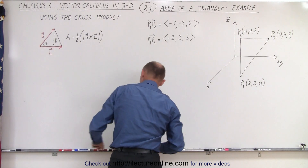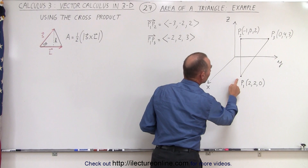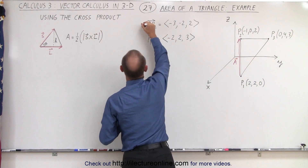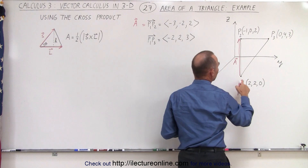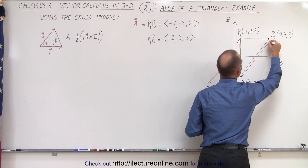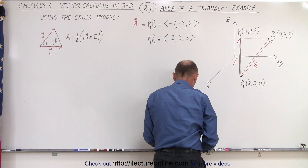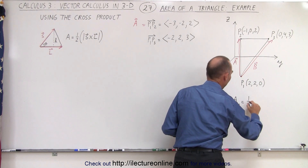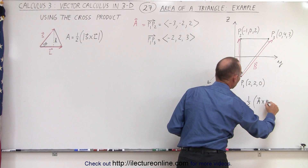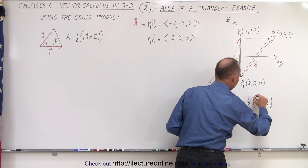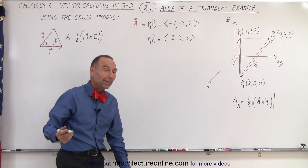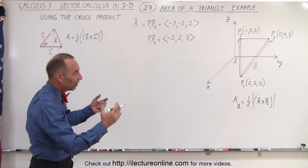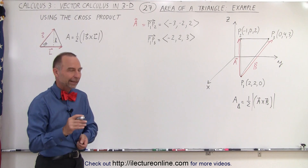We're going to define vector A from P1 to P2, and vector B from P1 to P3. The area of this triangle is going to be equal to one-half the magnitude of the cross product of two of the three sides. So pick any two sides, express them as vectors, take the cross product, and then multiply by one-half. Let's go ahead and try that.